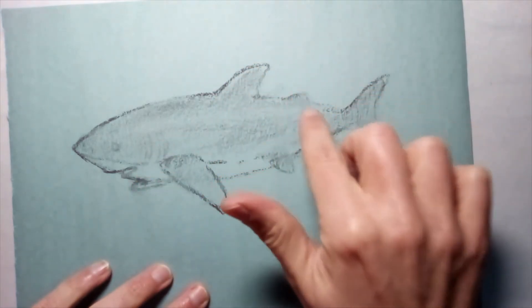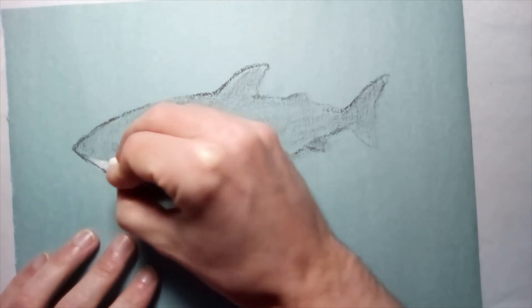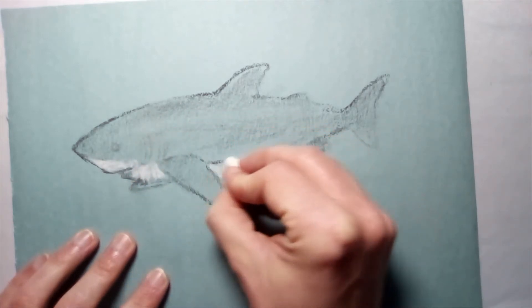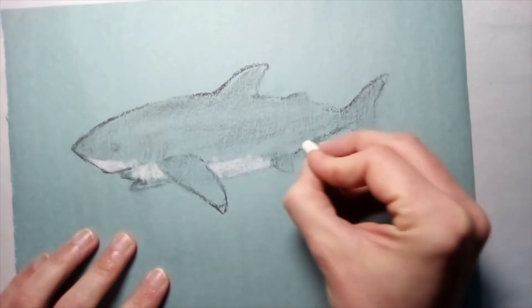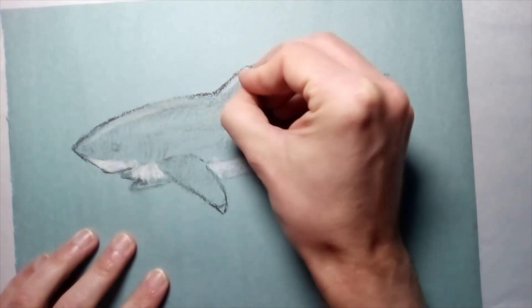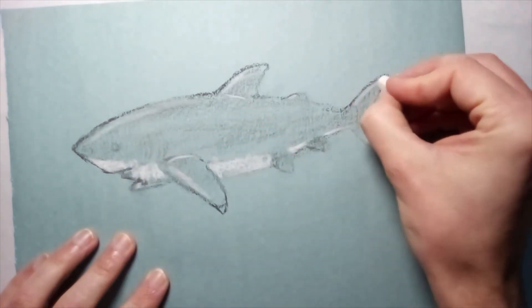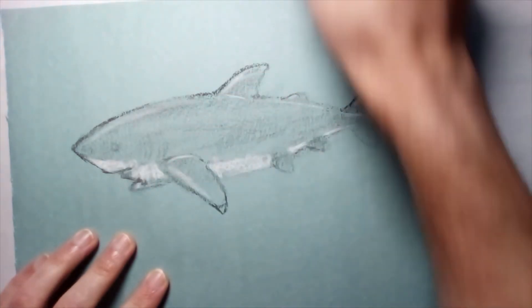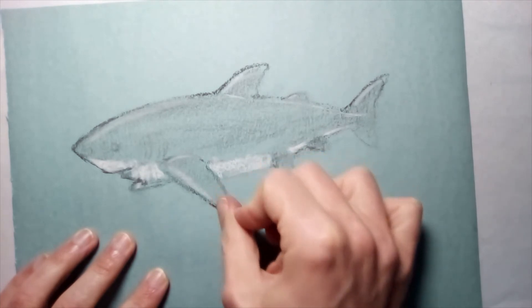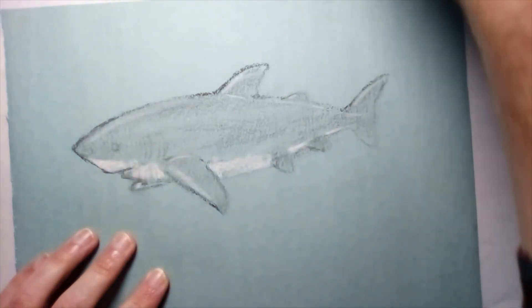Any lines that I need to tidy up, I'll just go back over again later. Now I'm going to go back in with the white - this is where it really starts to pop out. And I'm going to catch a few highlights. Just working it in with my finger, then I'm going to go back to the black.